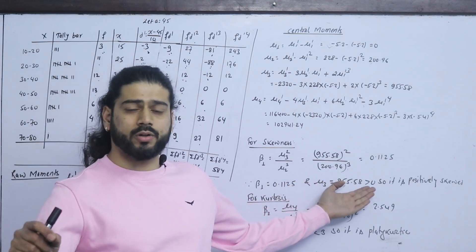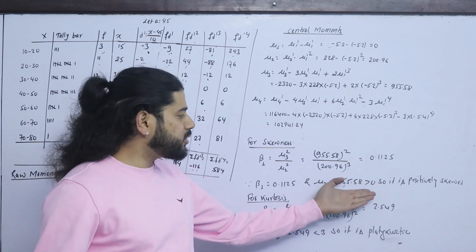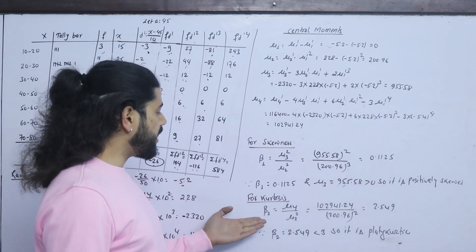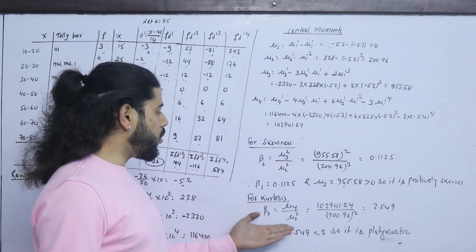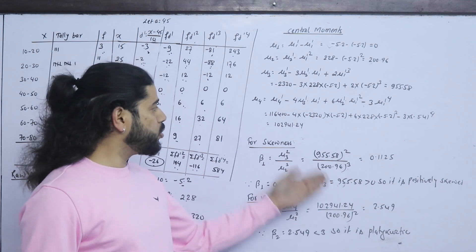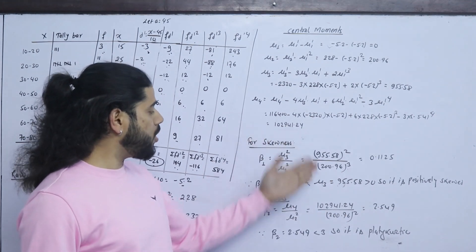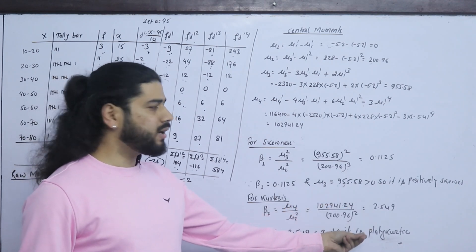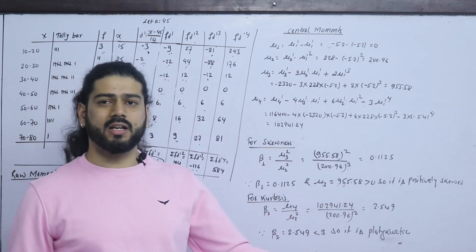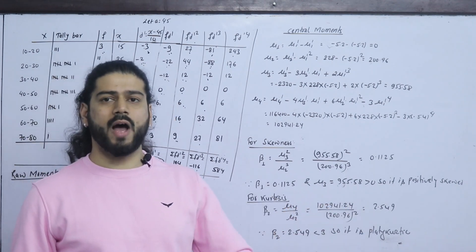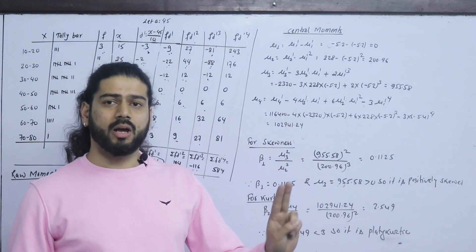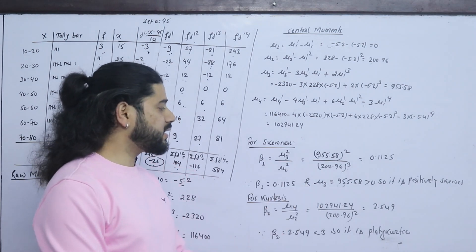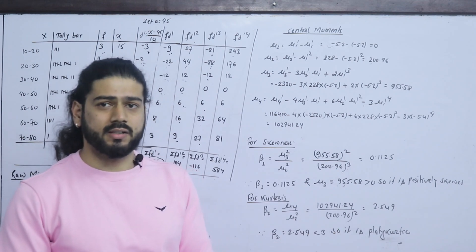In the previous transfer, μ3 was negative; here it is positive. In this case, β2 = μ4 / μ2². If μ4 is 102941.24 and μ2 is 200.96 squared, β2 = 2.549. The question is whether it is 3 — it is less than 3.